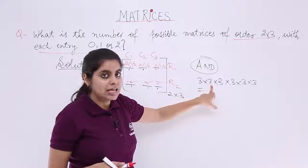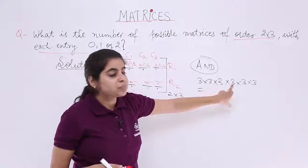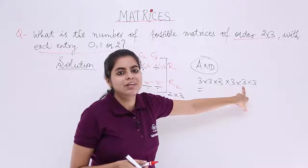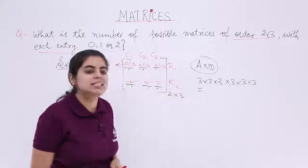3 times 3 is 9. 9 times 3 is 27. 27 times 3 is 81. 81 times 3 is 243. And 243 times 3 is 729.